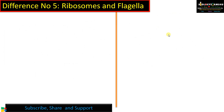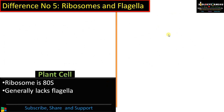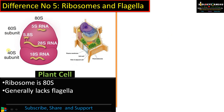Difference number five: ribosomes and flagella. In the case of the plant cell, the ribosome is 80S, made up of a 40S small subunit and a 60S large subunit. Generally, plant cells lack flagella. In lower groups like pteridophytes and bryophytes they have ciliated sperms or male gametes, and even in cycads among gymnosperms there are ciliated male gametes — but generally speaking, flagella are absent in plants.